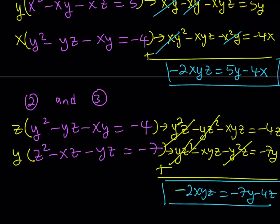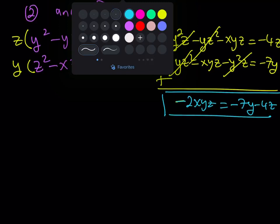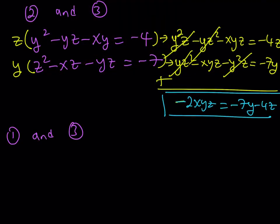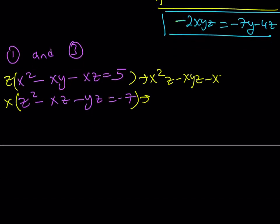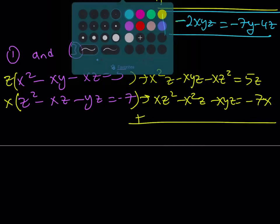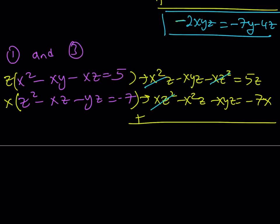The left-hand sides are equal. Now let's take equations 1 and 3 together. The first equation is x squared minus xy minus xz equals 5, and the third is z squared minus xz minus yz equals negative 7. Multiplying the first by z and the second by x gives: x squared z minus xyz minus xz squared equals 5z, and xz squared minus x squared z minus xyz equals negative 7x. Adding these, xz squared and x squared z cancel, and we get negative 2xyz equals 5z minus 7x.